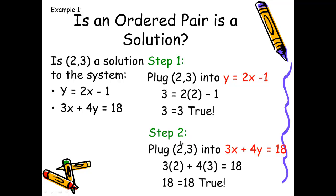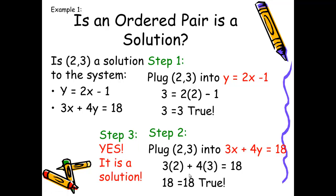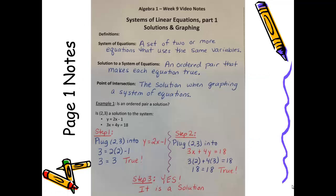In step two, I plug the same point into the second equation, 3x plus 4y equals 18. Substituting 2 for x and 3 for y, I get 6 plus 12 equals 18, and sure enough, 18 does equal 18 — that's true. So in step three, I conclude that yes, this is a solution, because this point makes both equations true. This is what page one of your notes should look like when completed — please take a moment to stop and fill in any gaps.